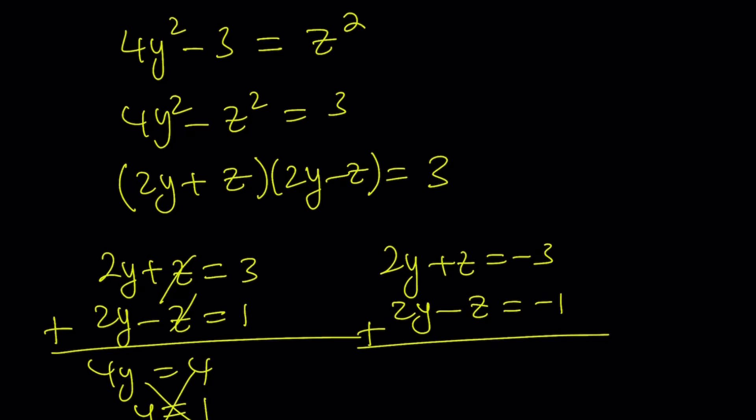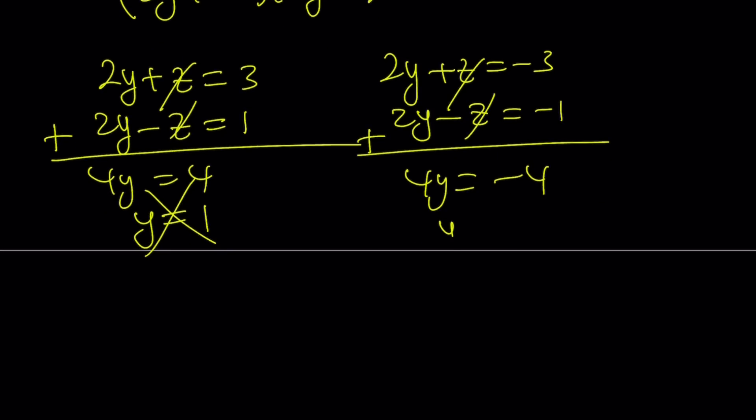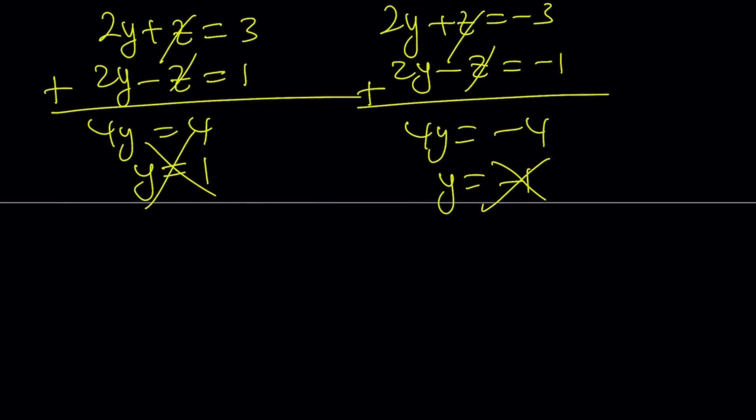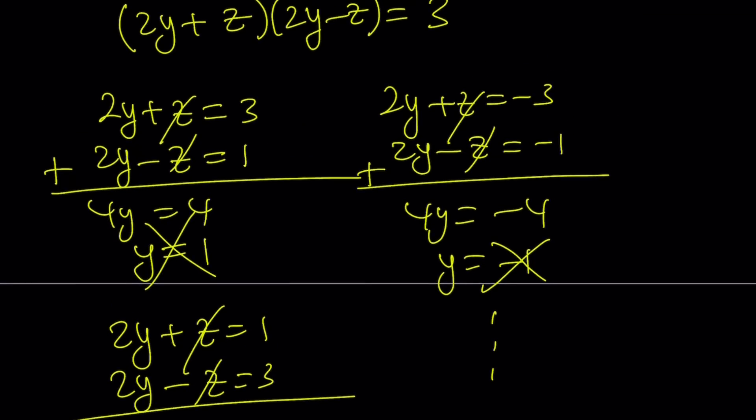Z cancels out. We get 4y equals negative 4, and y equals negative 1. Unfortunately, this is not going to work either, because we said that y squared minus 1 cannot be 0. How about the 1 and the 3 situation? Well, think about it for a minute. If you switch the 3 and the 1, the z value changes, but the y value does not change. So, you get the same two cases. Therefore, we're not going to get any solutions from here. But these are the only possibilities.